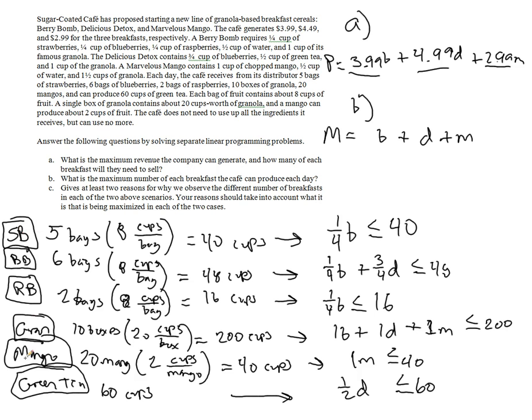So for strawberries, I like to break it up in terms of all the ingredients that I have. Strawberries, they get five bags. Each bag can do eight cups, so that means there are 40 cups of strawberries total. Six bags of blueberries at eight cups per bag is 48 cups of blueberries available. This is each day. Raspberries, two bags at eight cups per day is 16 cups available total.